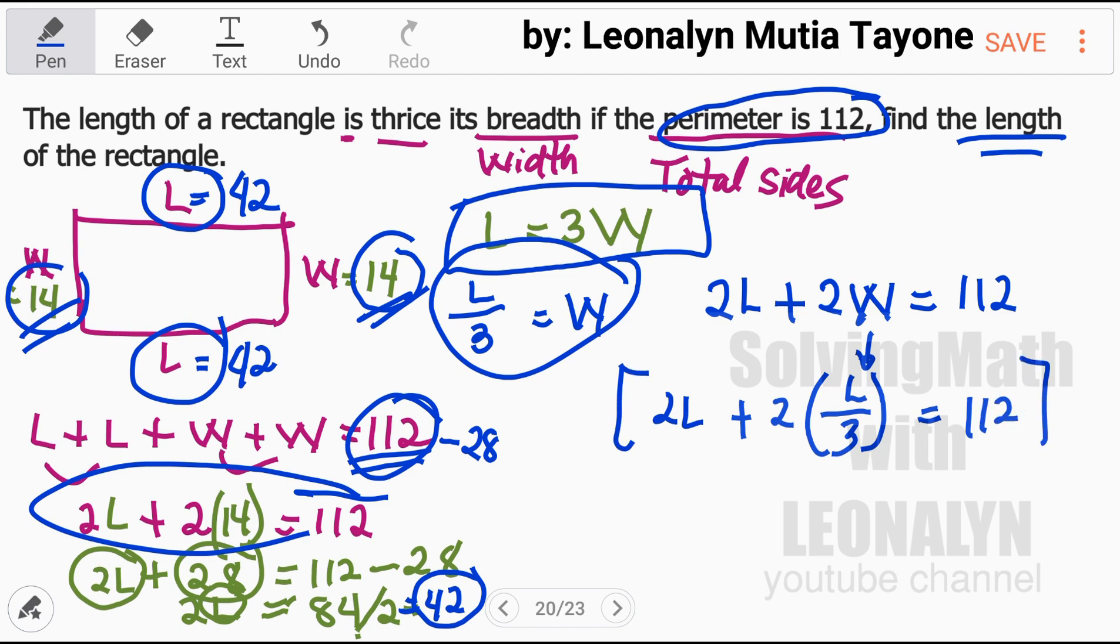We'll multiply this whole equation by 3 to cancel the denominator 3 there. So 3 times 2L, this is 6L plus, what remains here is just 2L since the 3 denominator is canceled. 112 times 3, that is 336.